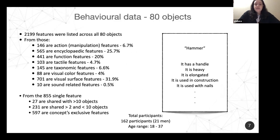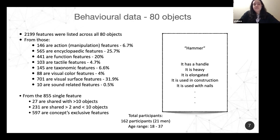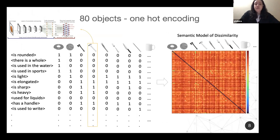Here we have the behavioral data we have collected. We had 162 participants in this behavioral experiment, where we gave them 80 pieces of paper, each with the name of one object — for example, a hammer — and asked participants to write down all the semantic features that could describe that object. They wrote things like: a hammer has a handle, it's heavy, it's elongated, and so on. We ended up with 2,199 features divided into categories: action, encyclopedic, function, tactile, taxonomic, visual, and sound features. These features were then encoded as one-hot encoding vectors.